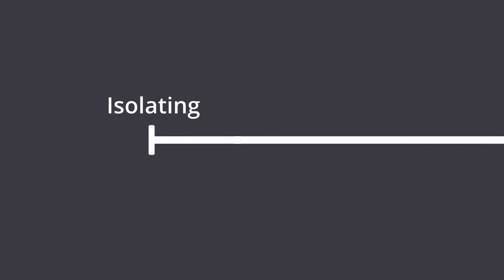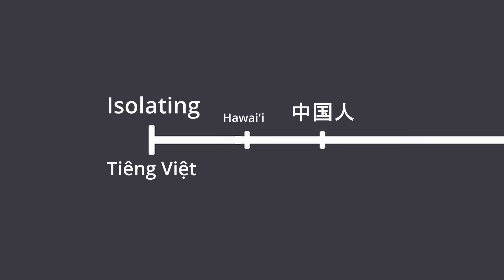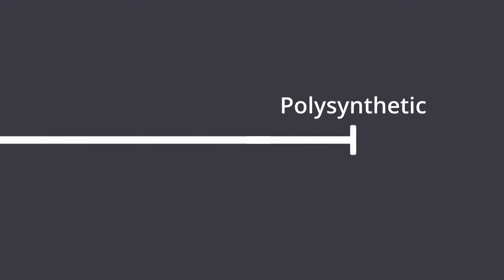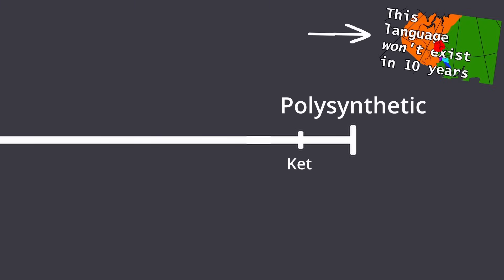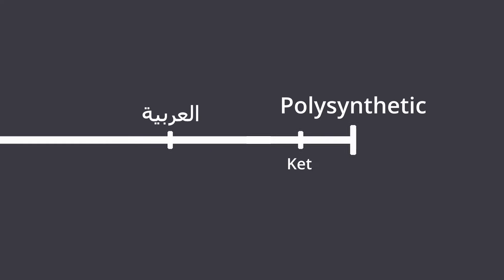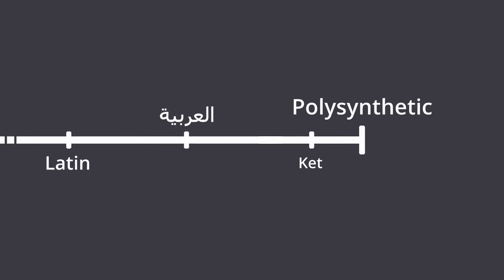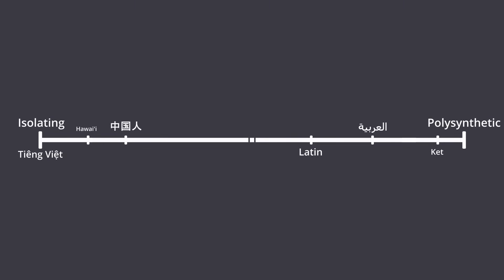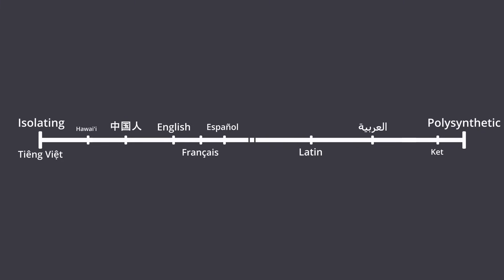So on the isolating side, all the way over you've got Vietnamese, then Mandarin, and there's also Hawaiian thrown in the mix there. All the way on the polysynthetic side, we've got Ket, which I've talked about in another video — link is up in the description. Arabic is kind of over there, and so is Latin. Slightly closer to the middle but a little bit further on to the isolating side is English, then French, then Spanish.